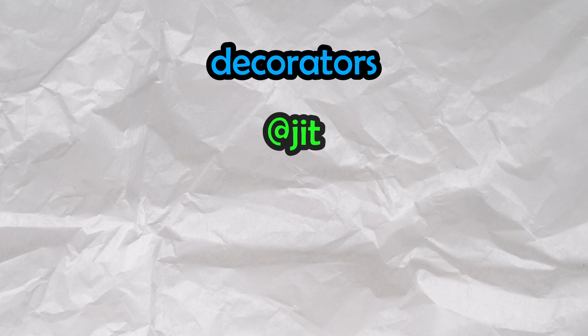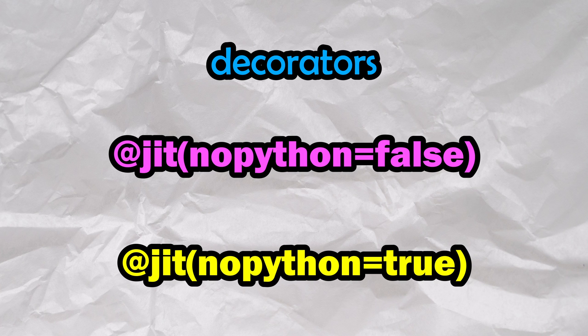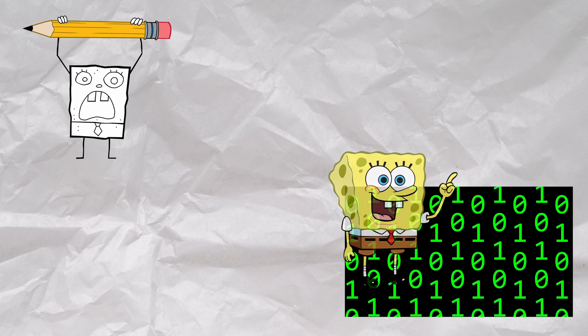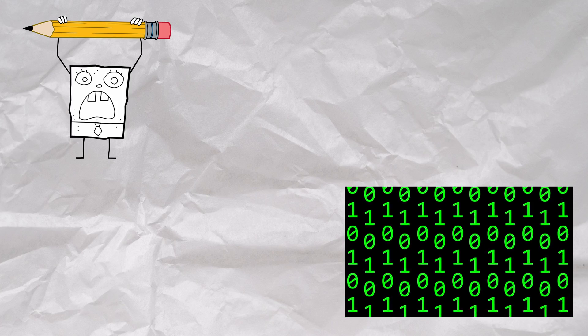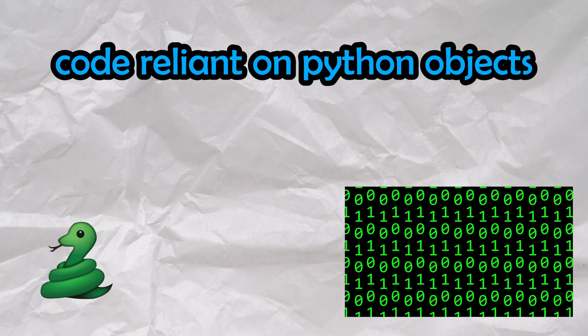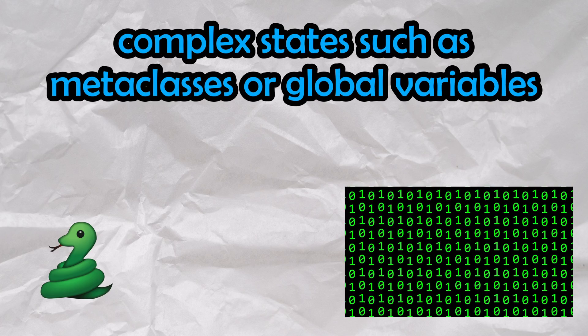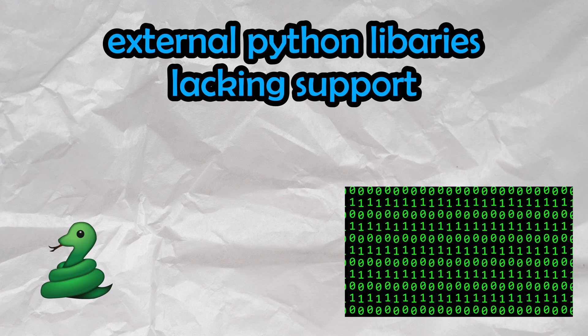We have the base decorator called @jit, which can be run in either object mode or nopython mode. It turns out not every single piece of valid Python can be compiled with Numba. Object mode is a hybrid or fallback mode, which will analyze your bytecodes and identify which parts are eligible for compilation. After compiling what it can, it will resort to the regular Python interpreter for the bits that are left over, such as code reliant on Python objects, dynamic typing, complex states such as metaclasses or global variables, or external Python libraries lacking support.